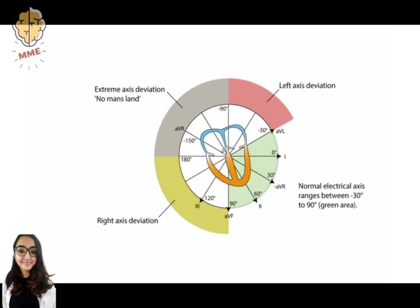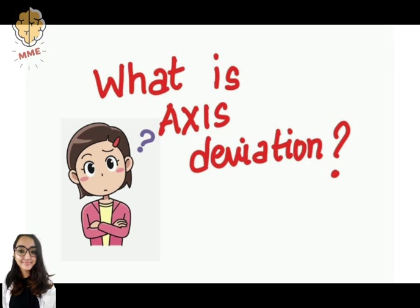Whenever the direction of electrical activity is towards a lead, you get a positive deflection in that lead. Whenever the direction of electrical activity is away from a lead, you get a negative deflection in that lead. Cardiac axis gives us an idea of the overall direction of electrical activity. Now, what is an axis deviation?